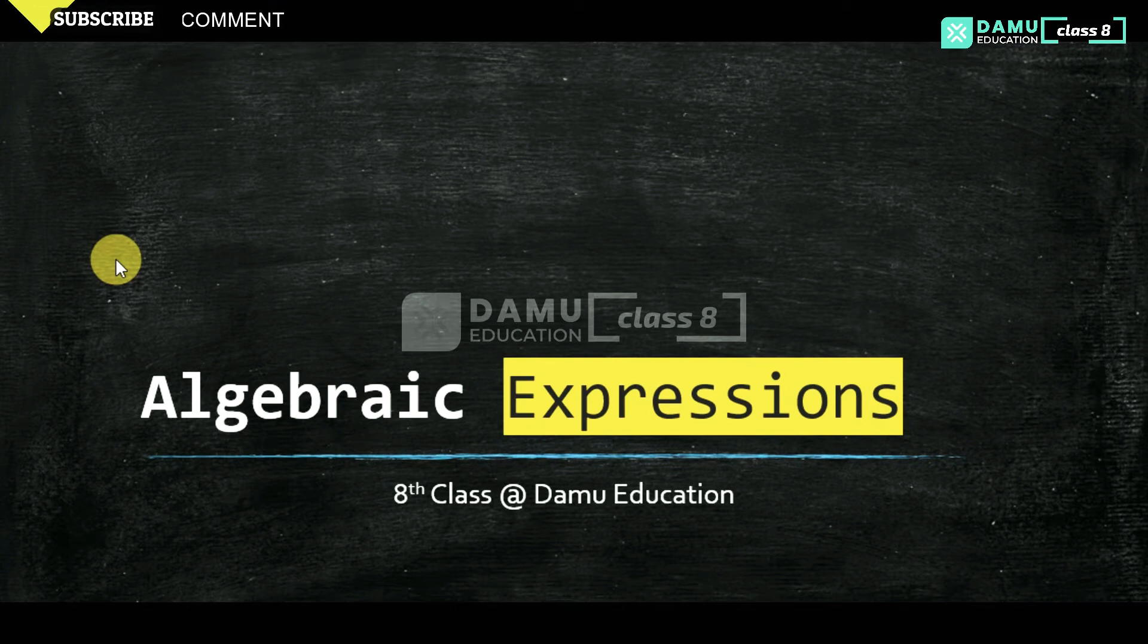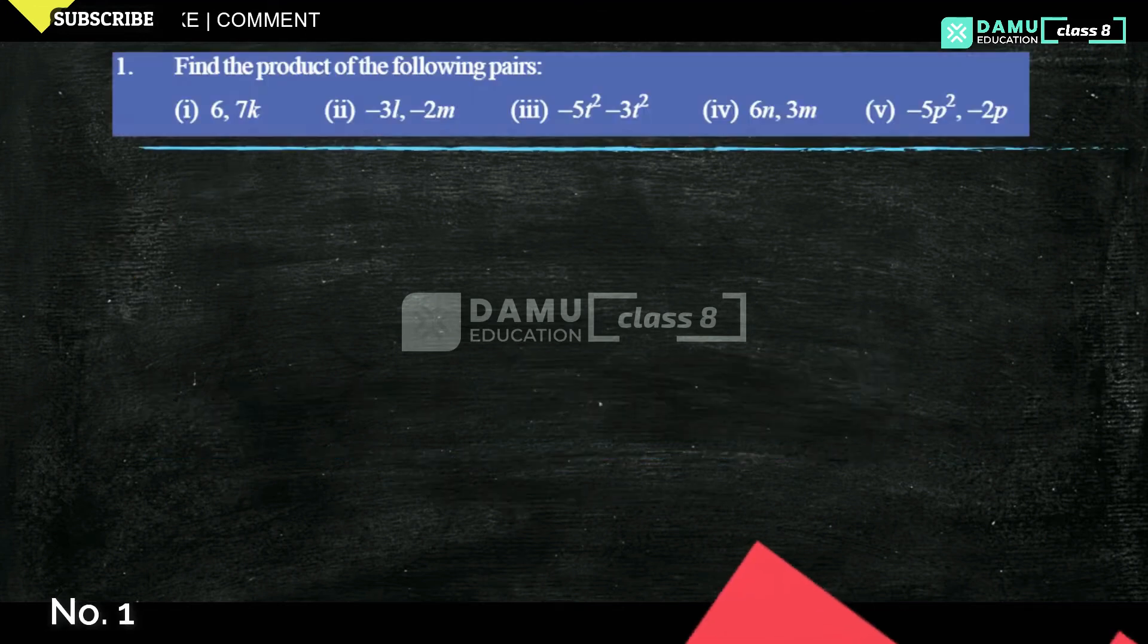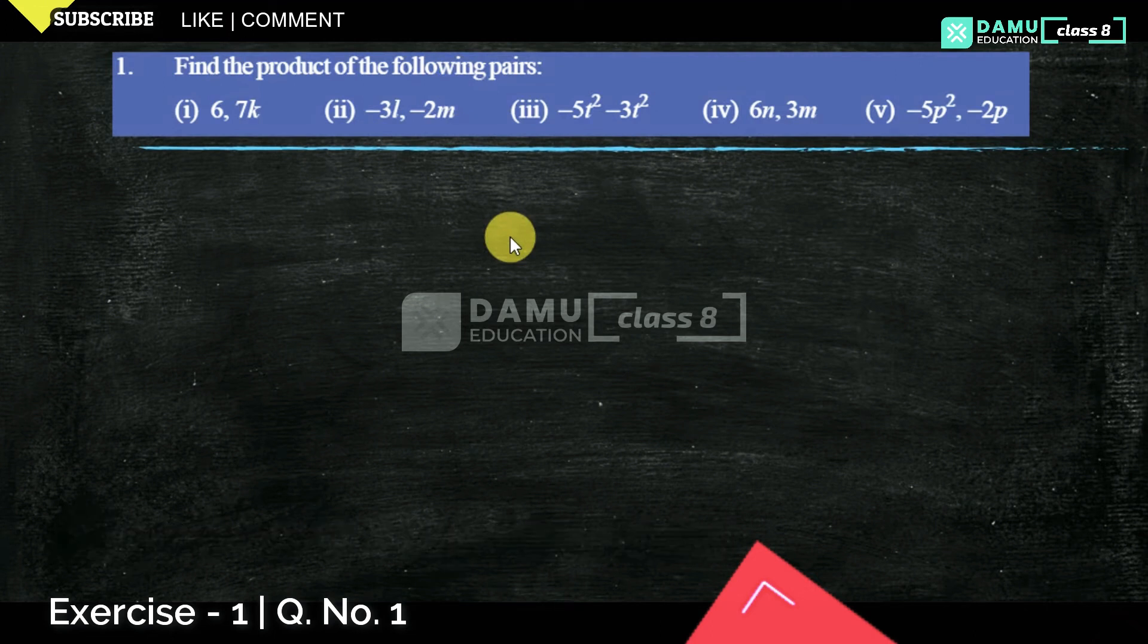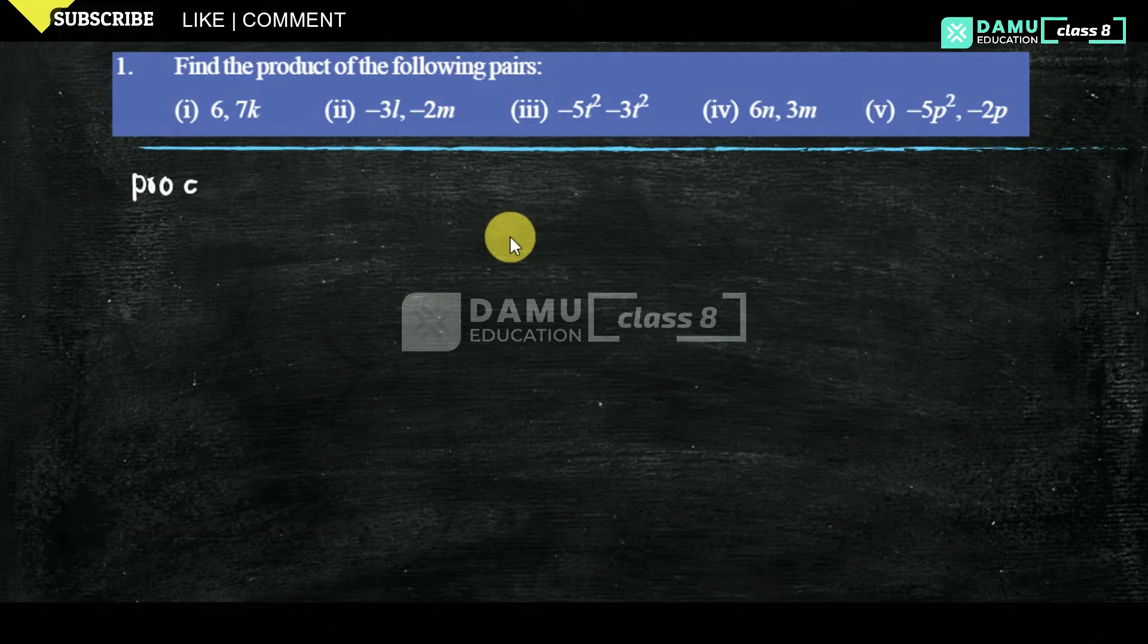So we will start now. Our first question, what is that? Find the product of the following pairs. So product is nothing but multiplication.